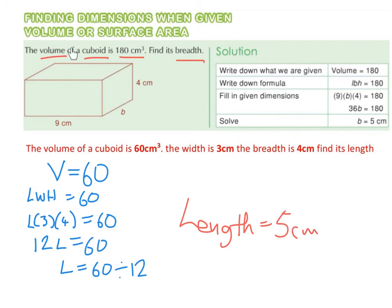And we can check with this one as well. The length by the width by the height, or the length by the breadth by the height, should be 180. So 9 by 5 is 45, and 45 by 4 is 180. So 5 is correct as well.